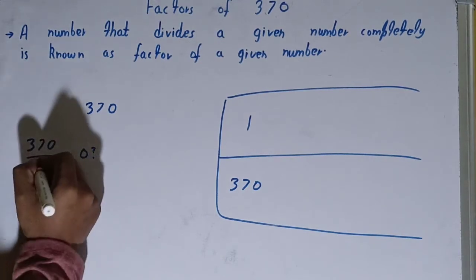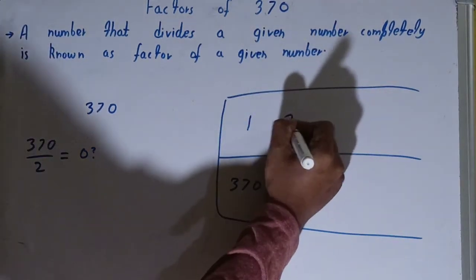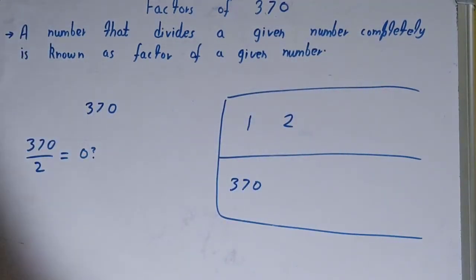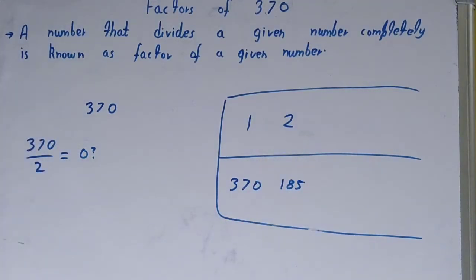After 1, we will check with 2. Now is the number 370 divisible by 2? Yes, it is, because 370 is even and all the even numbers are divisible by 2. So 2 is a factor, and 2 into what times? 2 into 185 times. So 2 is a factor and 185 is also the factor.